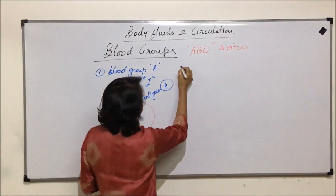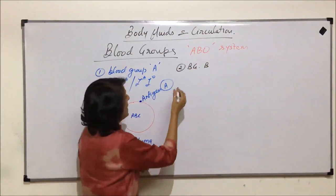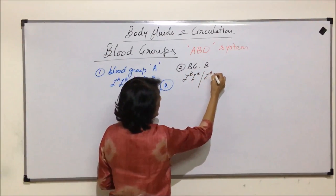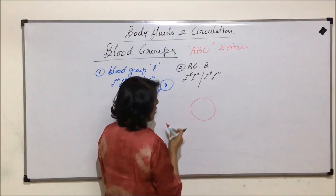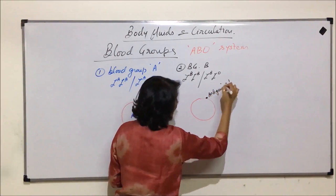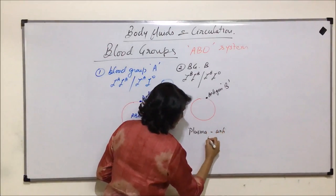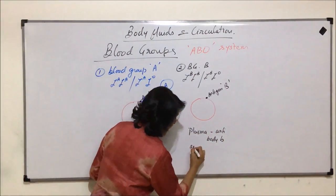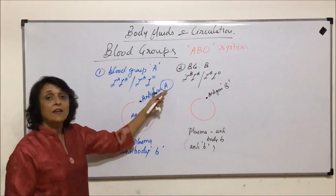For a person with blood group B, the genetic makeup could be IB IB (homozygous) or IB IO (heterozygous). Because of the B allele, on the RBC is present antigen B, and in the plasma is present antibody a (anti-a). This is the situation for a person having blood group B.